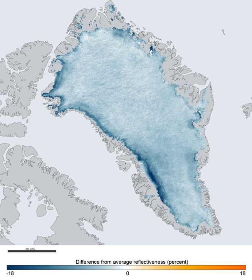This particular melt may be part of cyclical behavior; however, Laura Koenig, a Goddard glaciologist, suggested that if we continue to observe melting events like this in upcoming years, it will be worrisome. Global warming is increasing growth of algae on the ice sheet, which darkens the ice causing it to absorb more sunlight and potentially increasing the rate of melting.